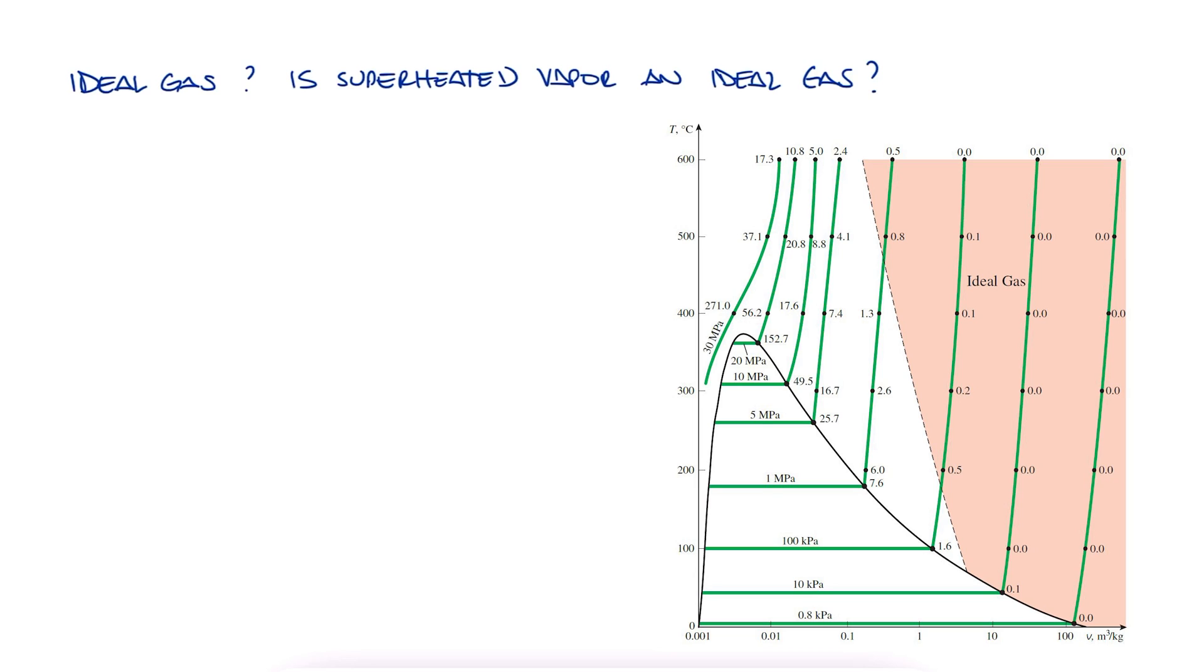There's actually a TV diagram that illustrates this pretty clearly. If the state you're considering is found in the ideal gas region shown here, of course, we can use the ideal gas equation. And it even tells us how much the percentage error is close to, depending on the location of our system's state. If our state is not located within that highlighted region, then you should use the superheated tables.